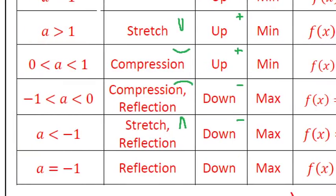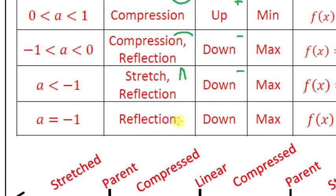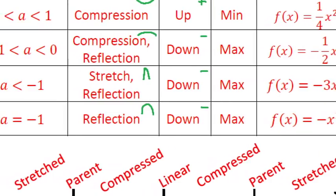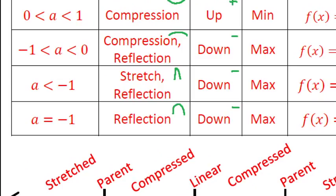What if a equals negative one? Now all we have is a reflection. It's not a fraction so it's not compressed, and it's not less than -1 so it's not stretched — it's just upside down with the normal shape. Because a is still negative, the graph faces down, the vertex is on top, and that's a maximum. An example is f(x) = -x², where the a value is just negative one.